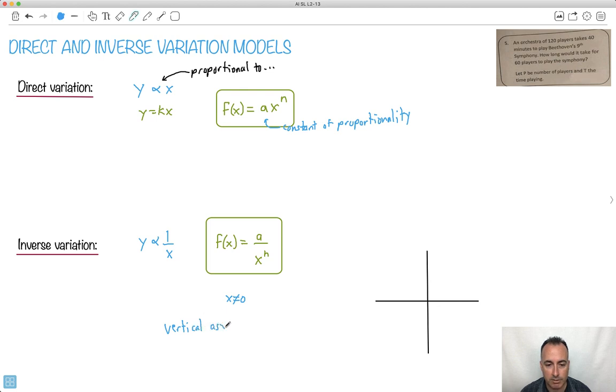So vertical asymptote. The vertical asymptote will just be at x equals 0. So we'll set the VA is at x equals 0. That'll be an important thing.